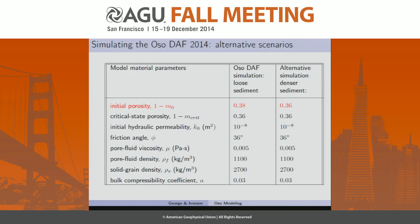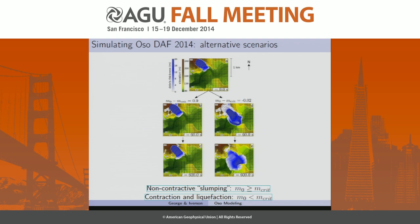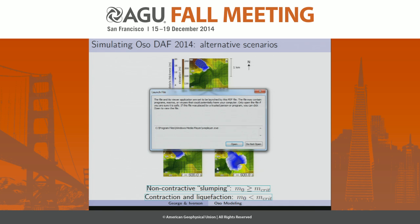When our initial porosity is slightly larger than that critical state value, it supports contraction and liquefaction and we get a large run-out versus just a slumping. On the left, the initial solid volume fraction and the critical solid volume fraction are equal, and in the other case it's 2% looser. In this first non-contractive case, we have the non-contractive slumping.